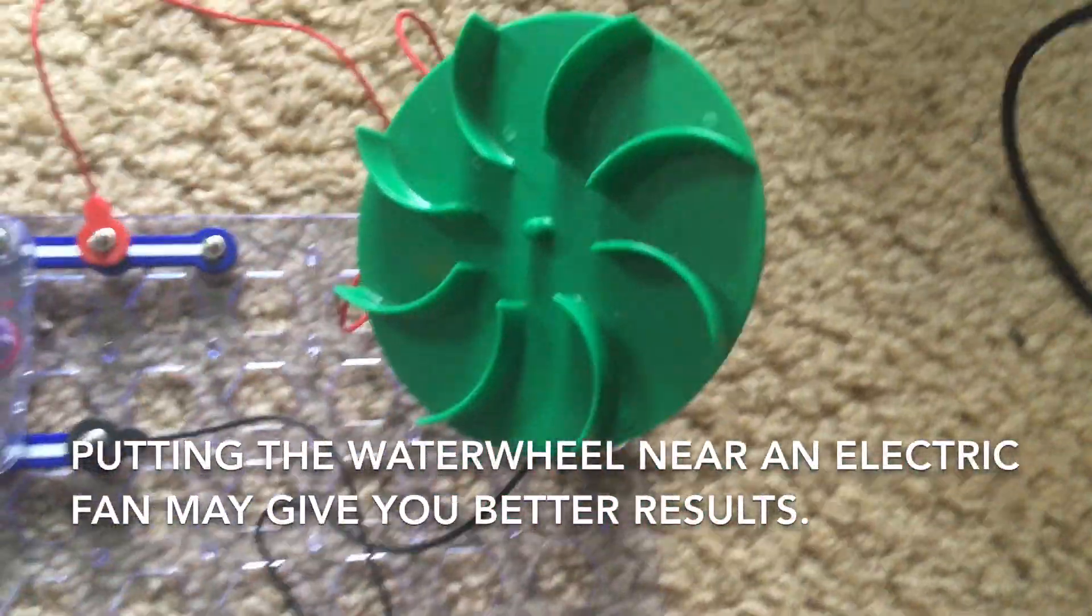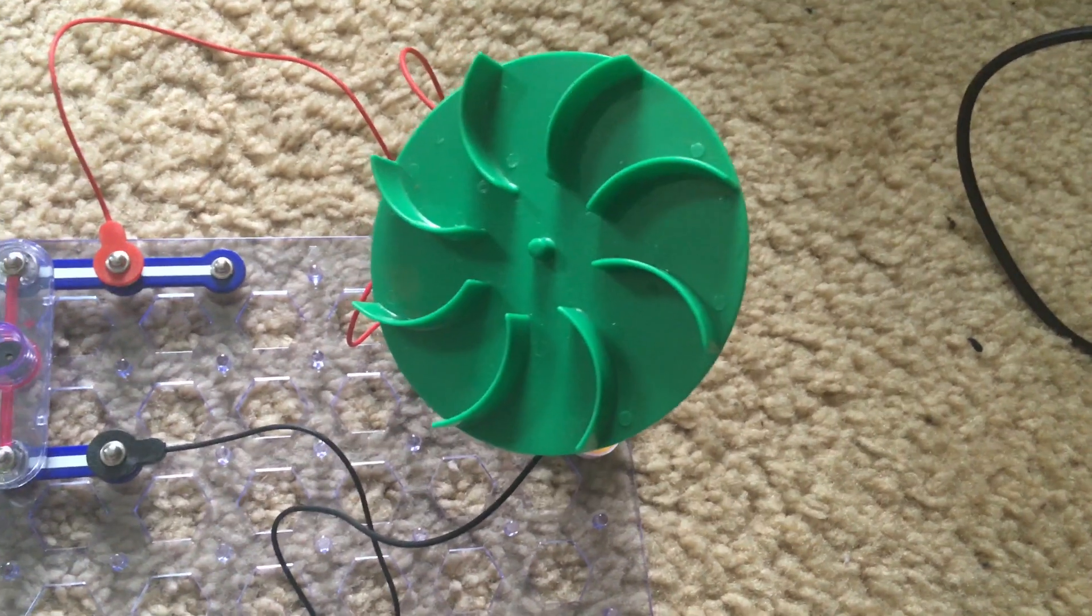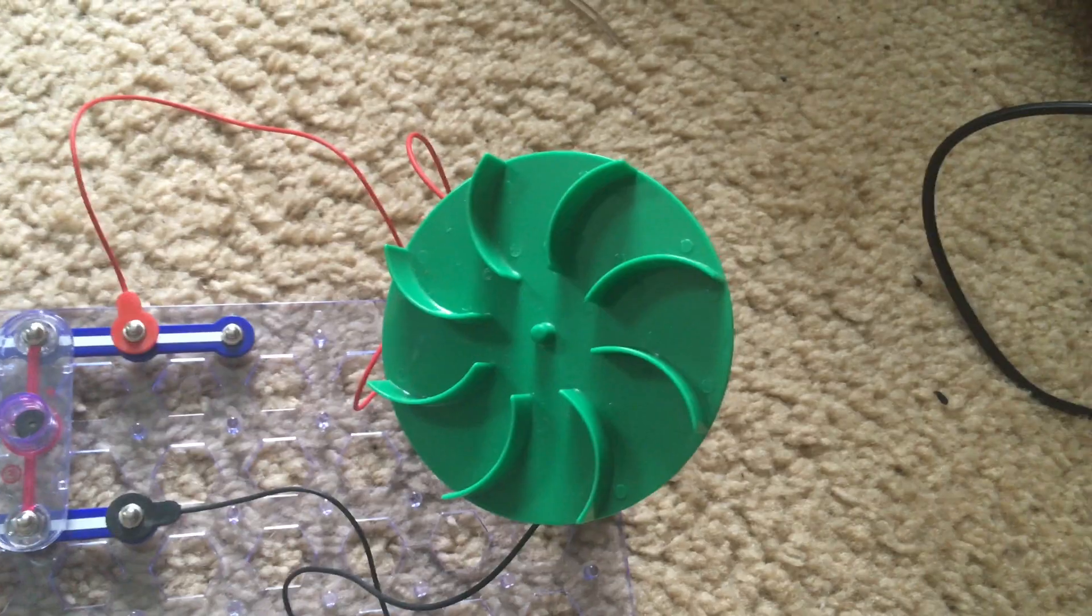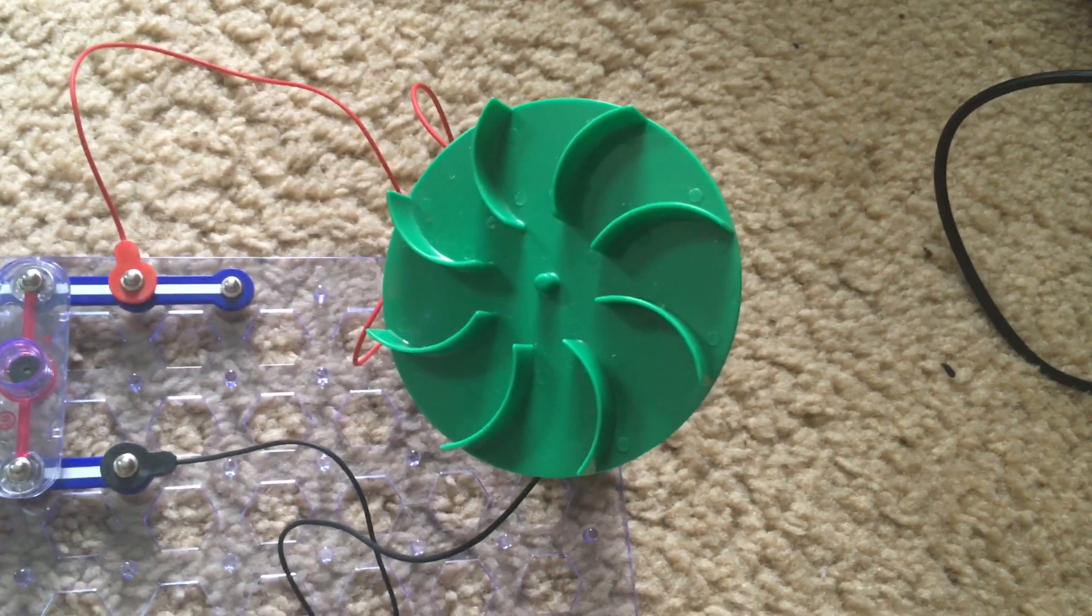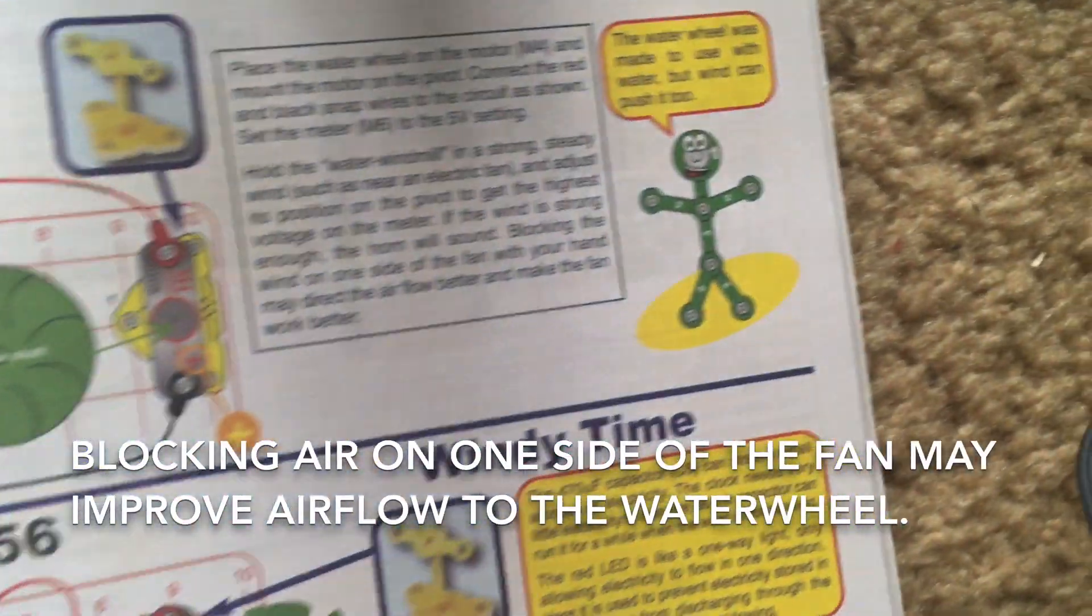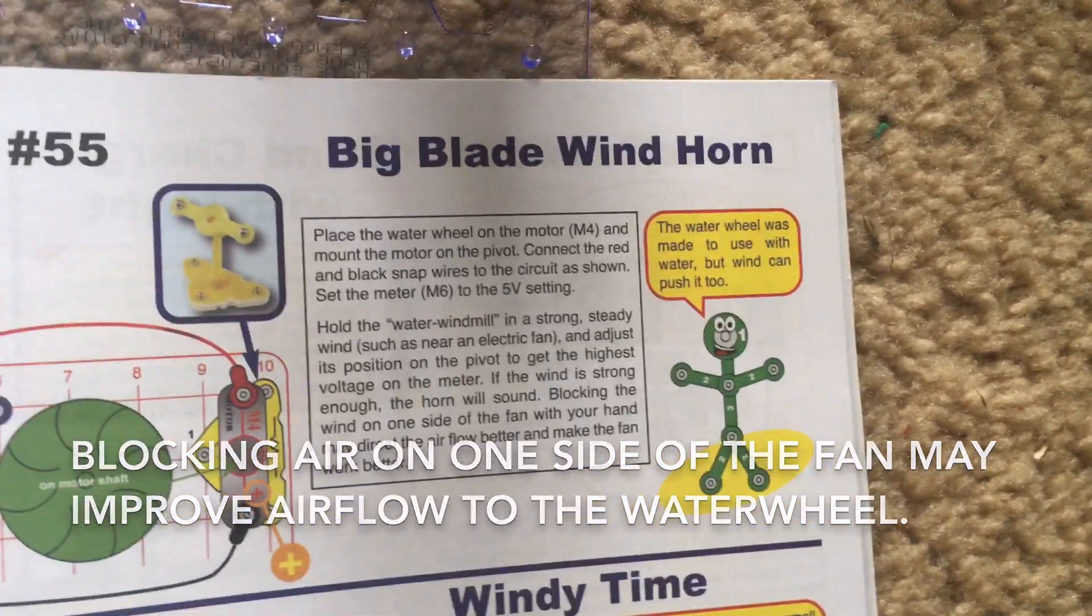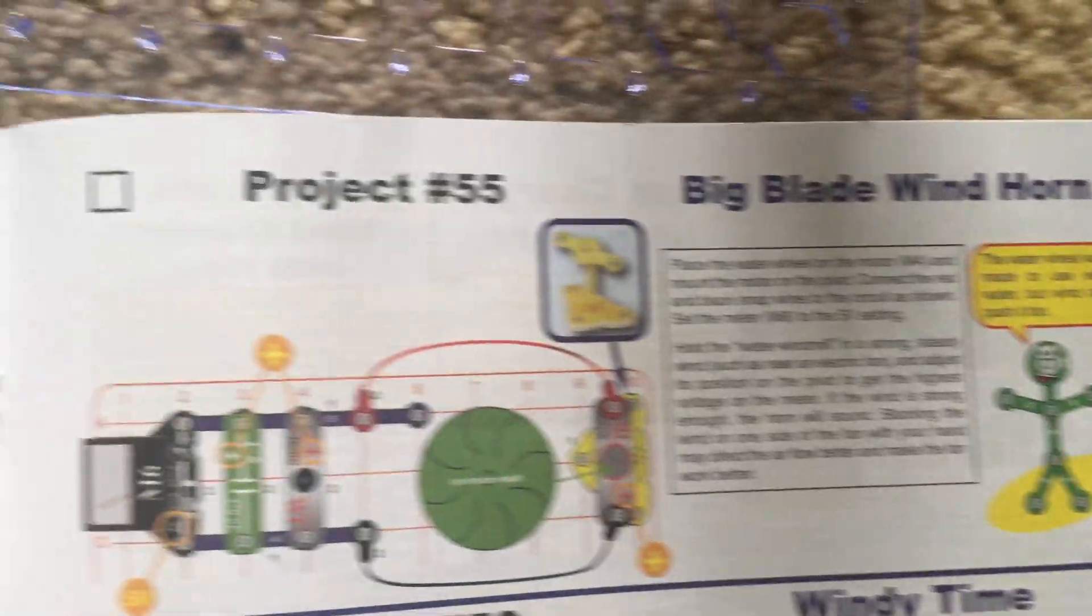The principle would be for the water mill to be able to produce electrical power for the horn. It's recommended that if you were to try this, carefully put it next to an electric fan so that it would have a steady wind. And if it's powerful enough, the horn will sound. Blocking the wind on one side of the fan with your hand may direct the airflow better and improve the performance.